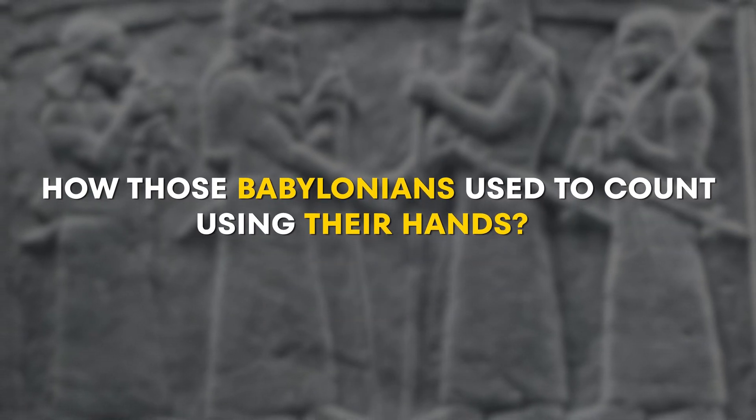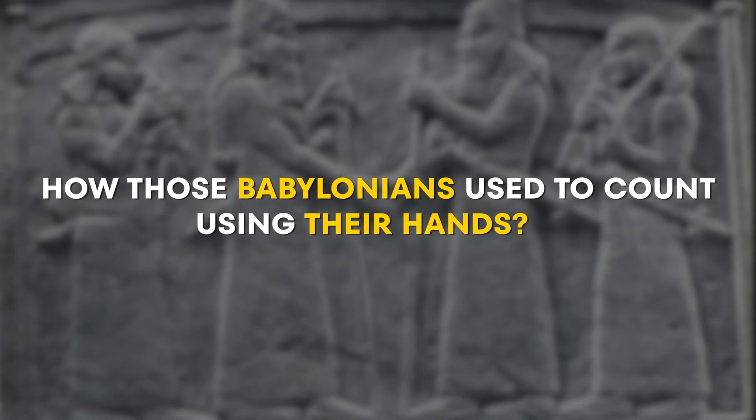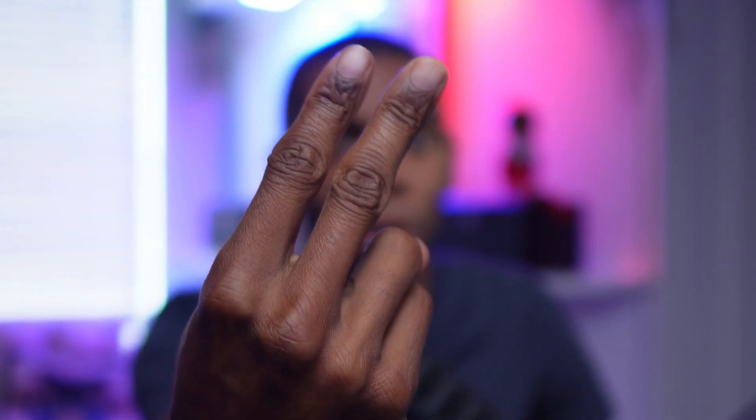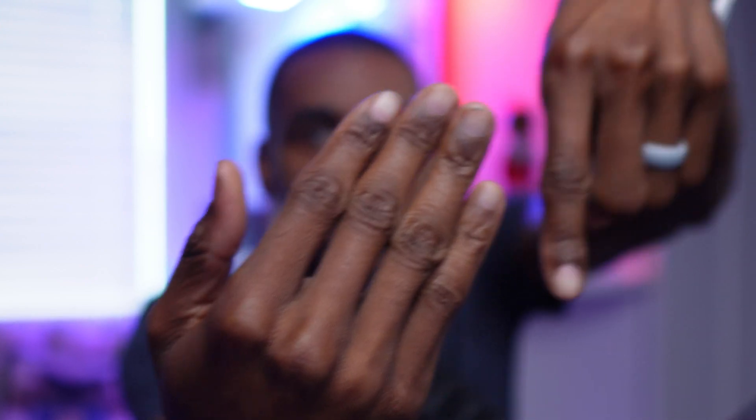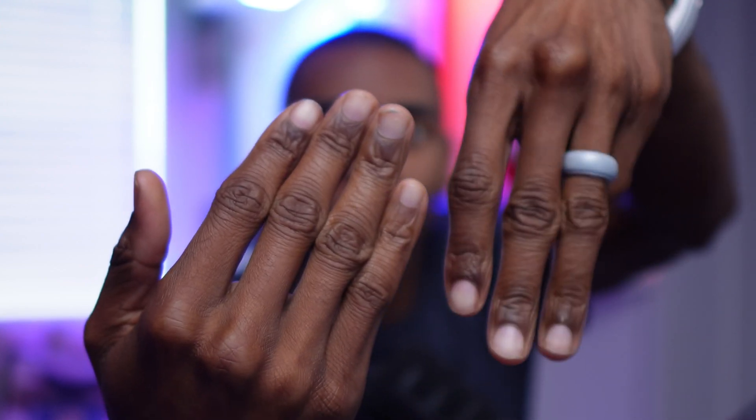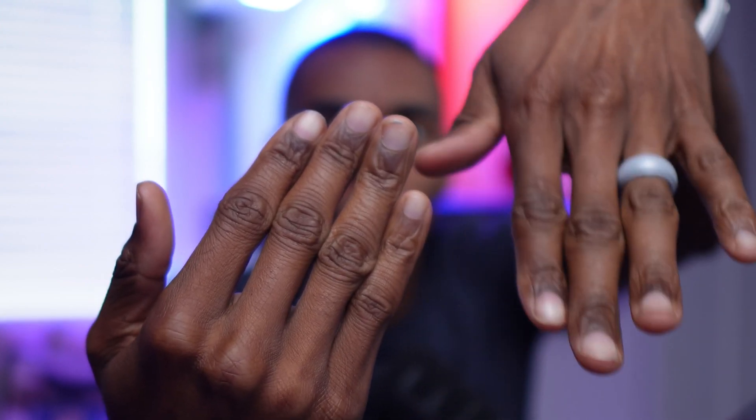Another interesting fact is actually how those Babylonians used to count using their hands. So if I were to ask you to count to 10 using your hands, you're probably going to do something like this: 1, 2, 3, 4, 5, 6, 7, 8, 9, 10. We use a base-10 system, we have 10 fingers — makes sense.